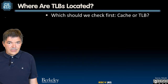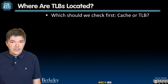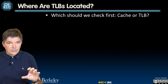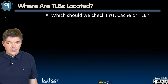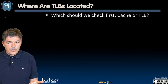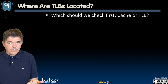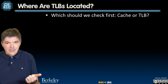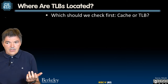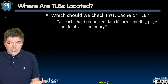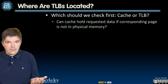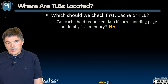The next question is, while we know what the TLB is supposed to do, how do we actually implement it and where in our data path should we have the TLBs? To answer that, let's ask ourselves: which should we check first for fresh contents — caches or TLBs? Can the cache hold requested data if the corresponding page is not in physical memory? No. So the TLB has to come first.